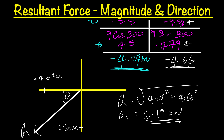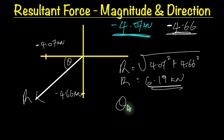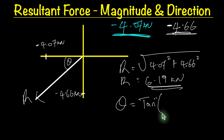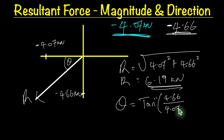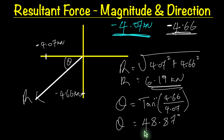Now let's work out the direction. The angle theta is tan inverse of the vertical force 4.66 over the horizontal force 4.07, giving us a direction of 48.87 degrees. I've done another video on the other method you can use to find the magnitude and direction of the resultant force, so if you want to compare the two methods to see which one you're most comfortable with, check out that next video.